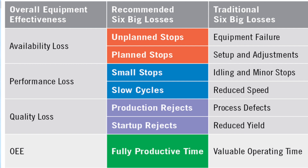With respect to Availability, the two key losses are: unplanned stoppages (such as equipment failure) and planned stoppages (such as setup and adjustment). For Performance loss, the two losses are: small stops and slow cycles — meaning idling, minor stops, or reduced speed. For Quality loss, the losses are: production rejects and startup rejects, resulting from process defects and reduced yield.